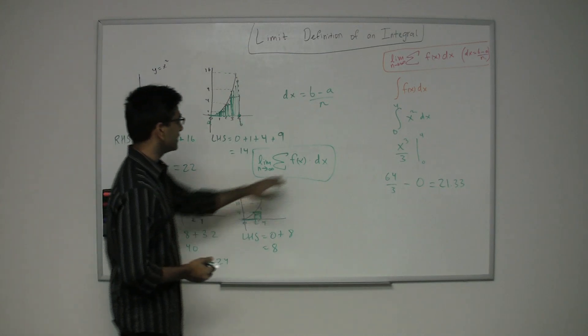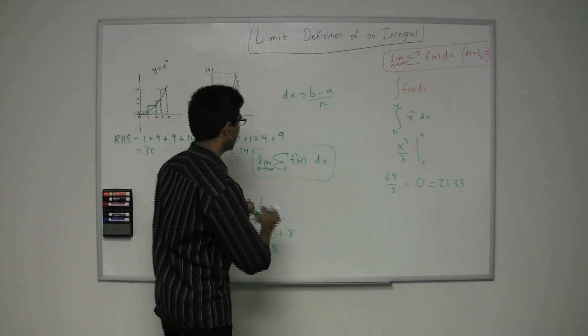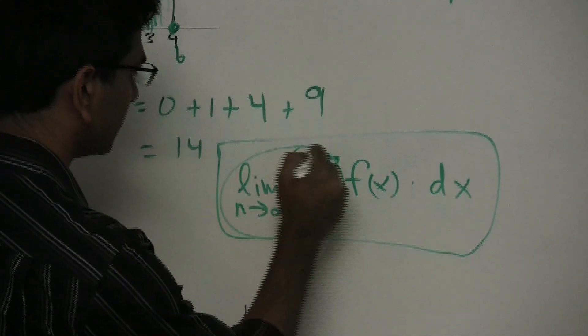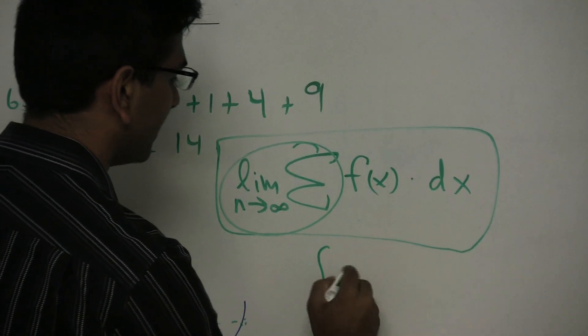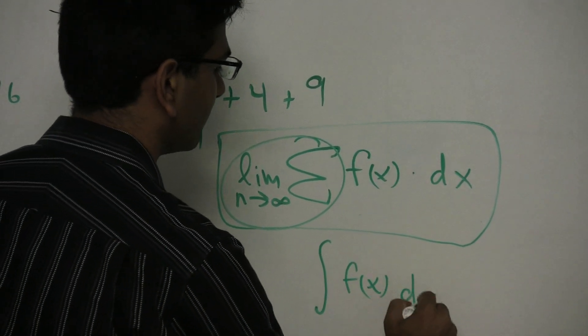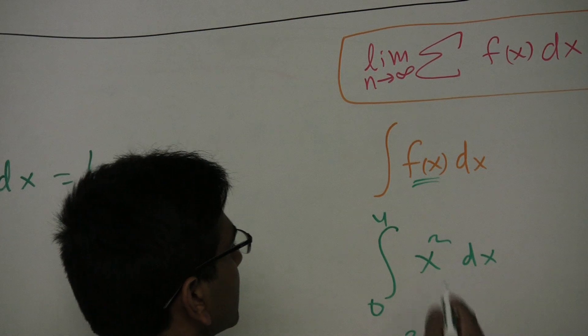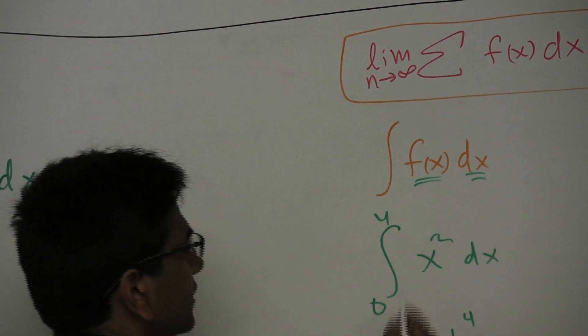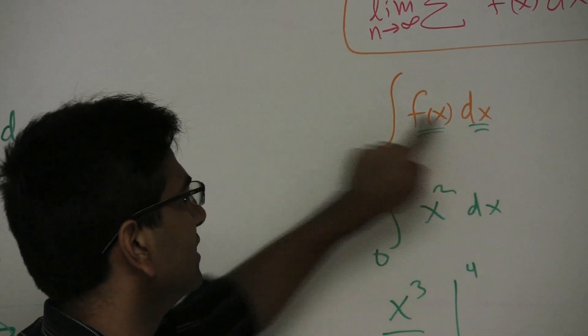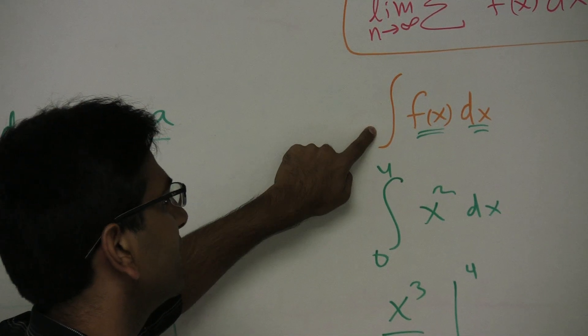So years later, we now know that this translates to something. This symbol turns into this, and then it's just f of x dx. So now when you look at this, you'll actually know where each of these comes from. This is the y value, and this is the width, so the length and the width of each rectangle. And this, you're just adding up an infinite number of them.